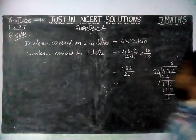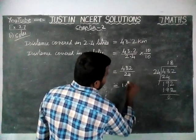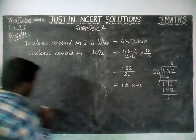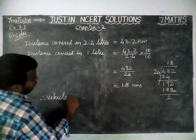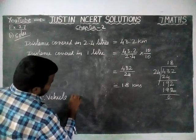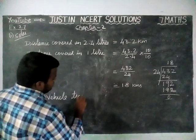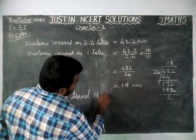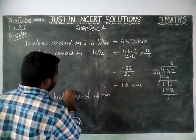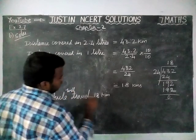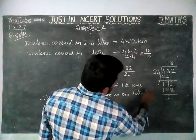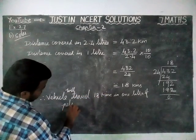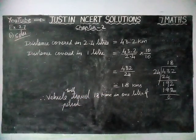So the quotient is equal to 18 kilometres. Therefore, the vehicle will cover 18 kilometres in 1 litre of petrol. In 1 litre, it will give 18 kilometres of mileage.